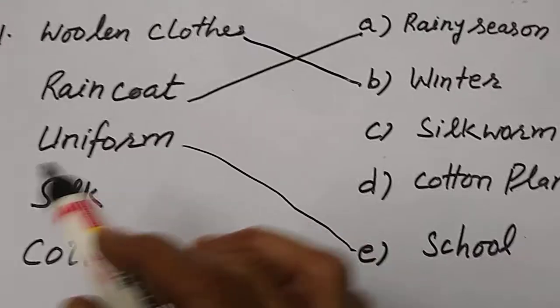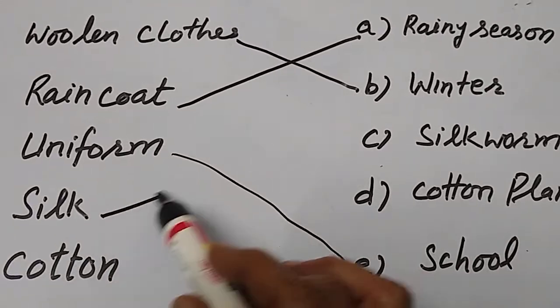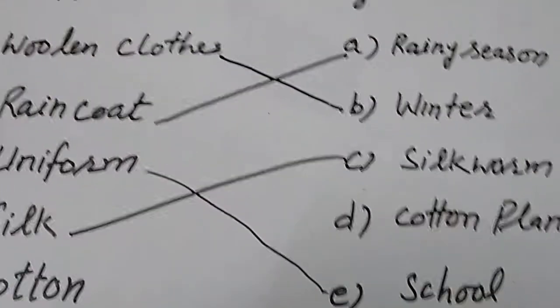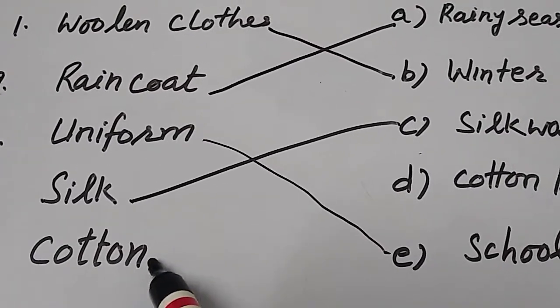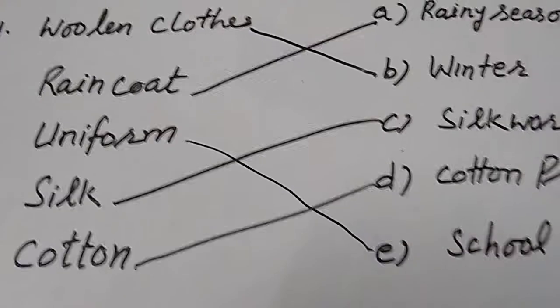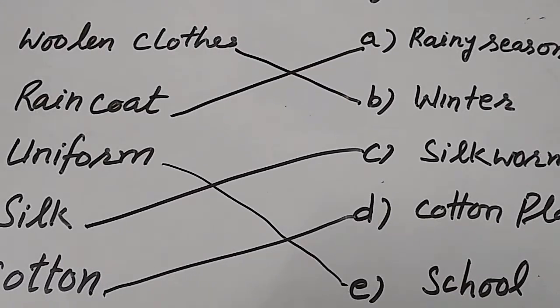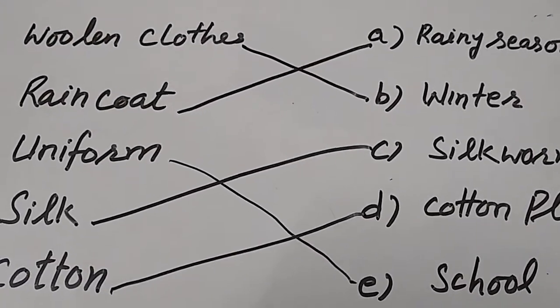And silk. Where do you get silk from? Silk we get from silkworm. And last is cotton. Cotton we get from cotton plant. These are the matches for woolen.